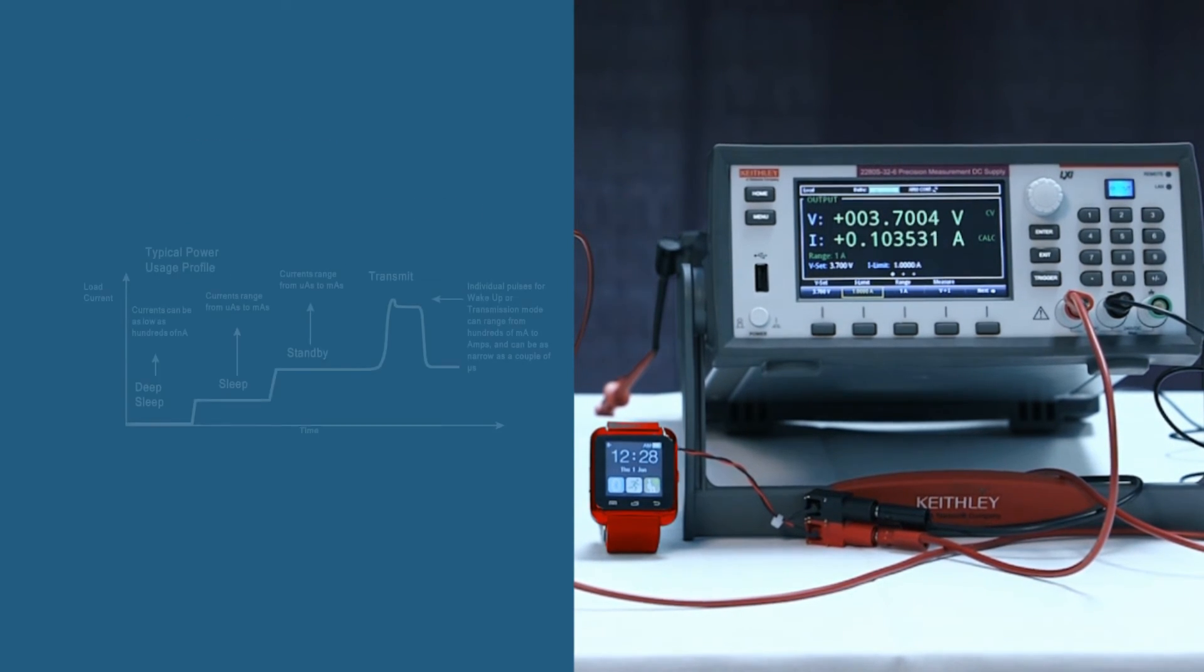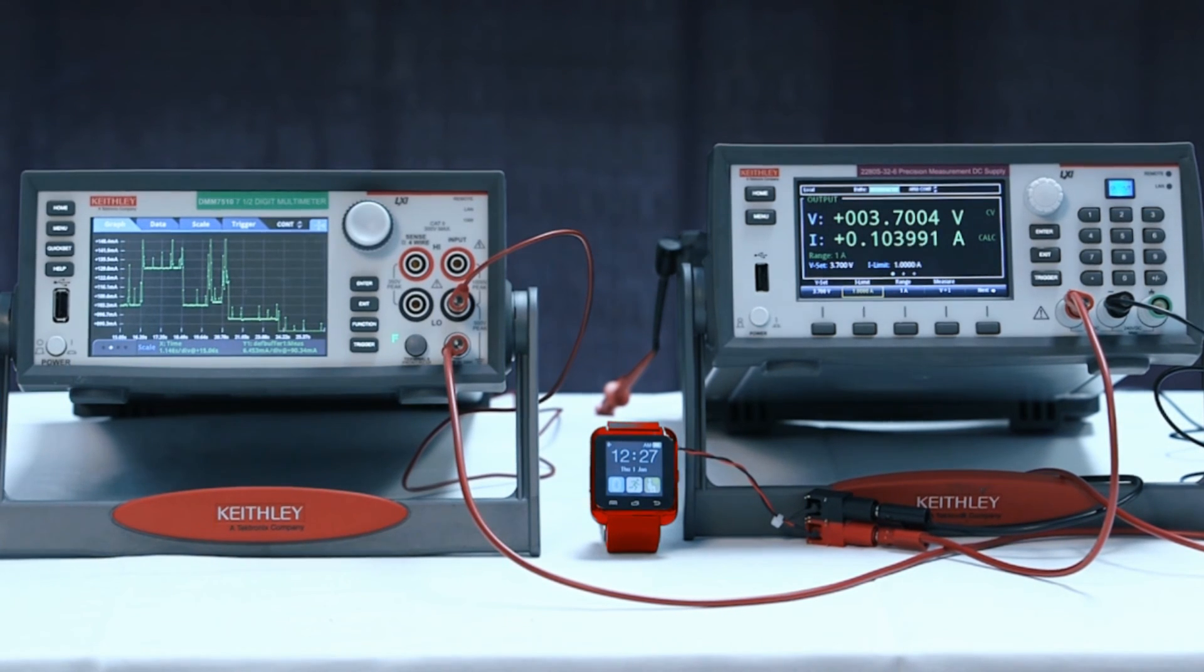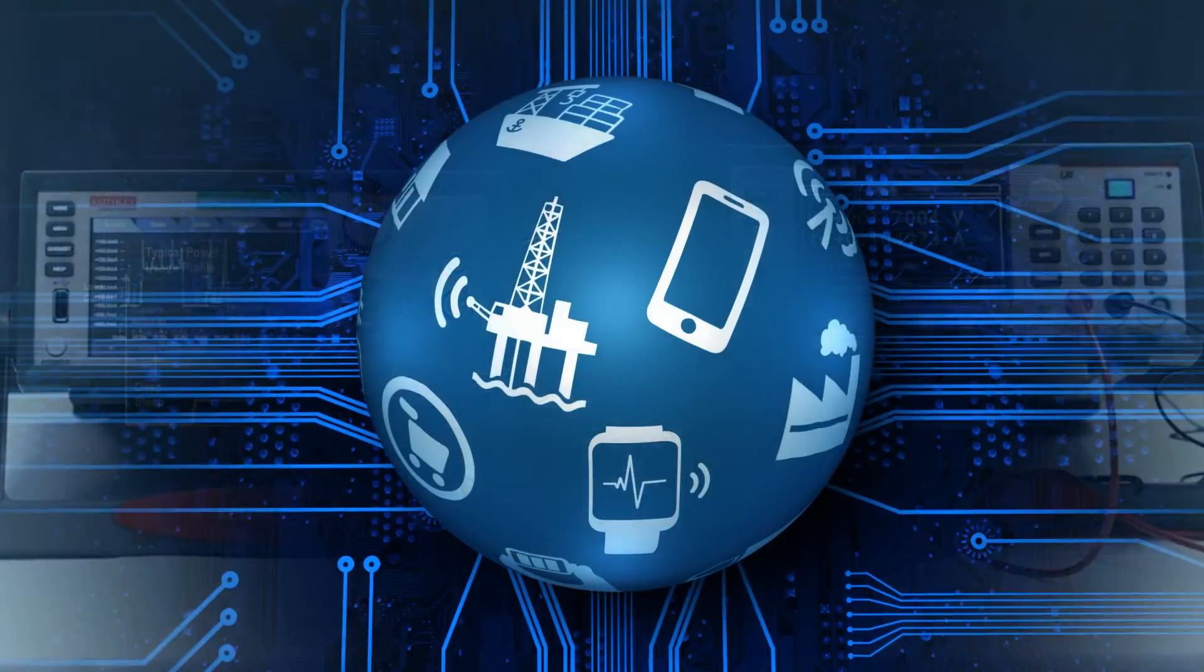You need a supply that can maintain a stable voltage like a battery even when your device makes a fast and large transition from a standby mode to a transmitting mode. The 2280s has a 50 microsecond transient response to supply a steady voltage even under your device's most demanding load changes.